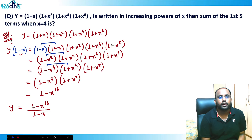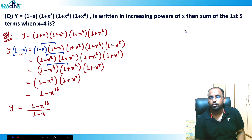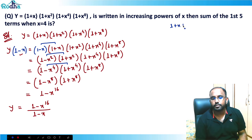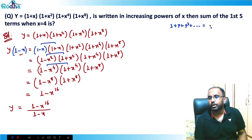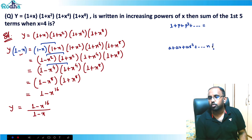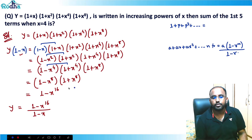Recall the sum of n terms of a GP: for a + ar + ar² + ... up to n terms, the sum equals a·(1 - rⁿ) / (1 - r). Here a = 1 and r = x. Looking at our expression (1 - x¹⁶) / (1 - x), we can match this formula directly.